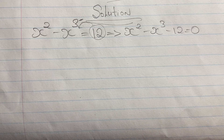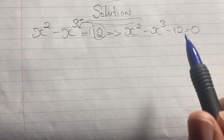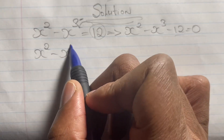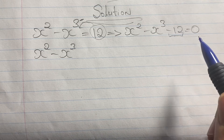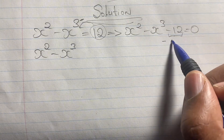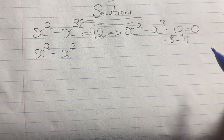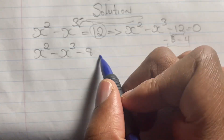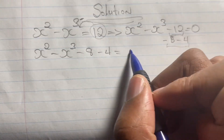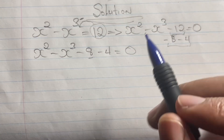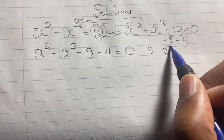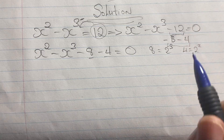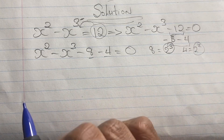We now have an equation that seems complex, but it will only get easier from here. We simplify further by looking at negative 12, which can be written as negative 8 minus 4, giving us x squared minus x cubed minus 8 minus 4 equals 0. What's interesting is that 8 is 2 cubed and 4 is 2 squared, which gives us an advantage in grouping like terms.